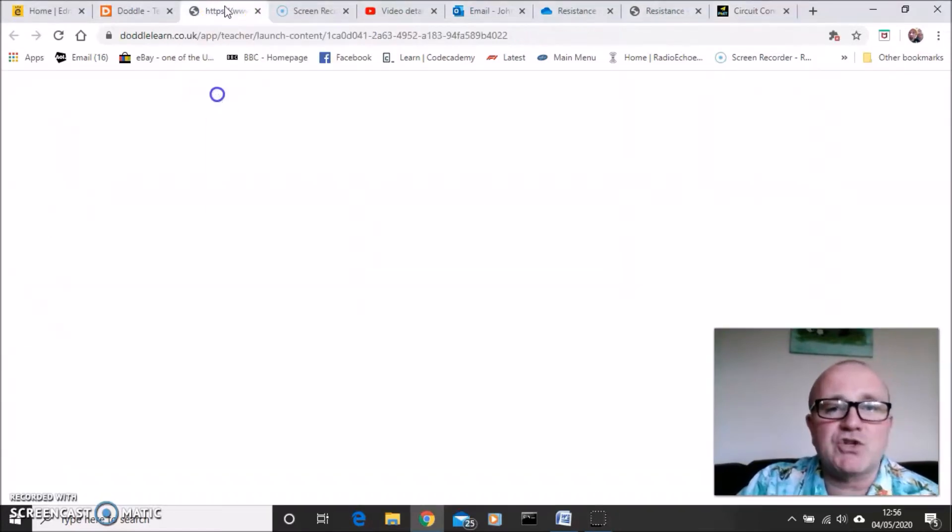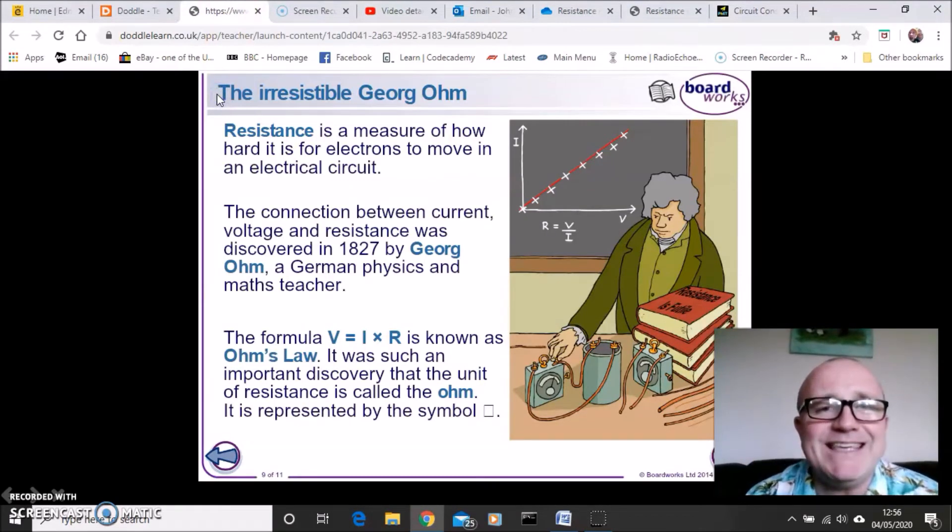Now resistance is a measure of how easy it is for electricity to flow around a circuit. It was discovered by someone called George Ohm in 1827 and it's from him that we get the units that we measure electrical resistance in. They're measured in units called ohms.